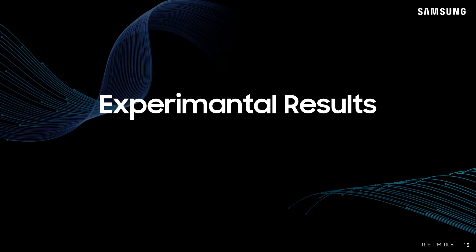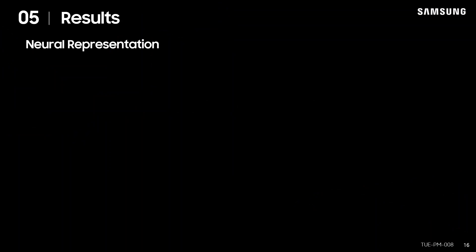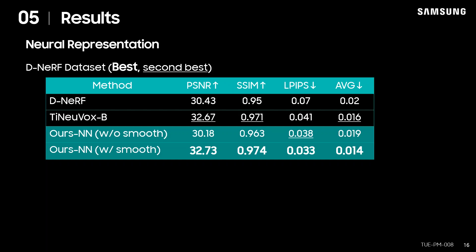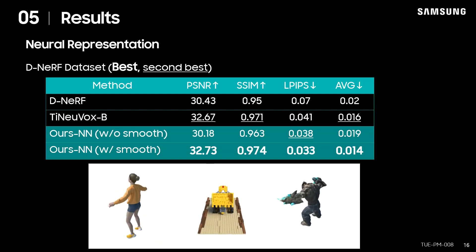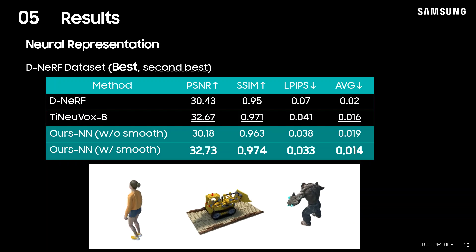Now we will show the experimental results. First, we will show the results of the neural representation on the D-NeRF dataset. Our method achieved state-of-the-art results on all metrics. Also note that the use of smoothness term significantly improves the rendering quality.